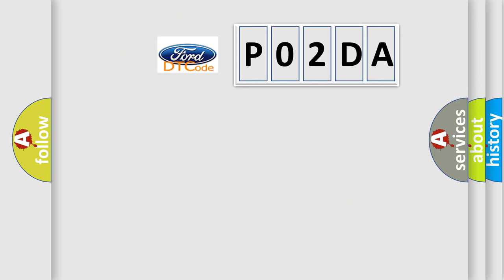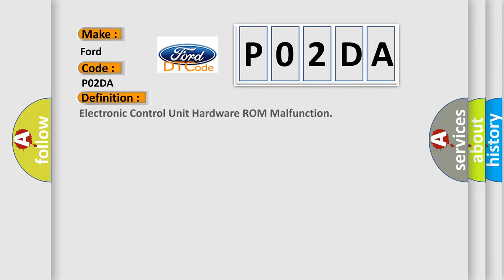The number itself does not make sense to us if we cannot assign information about what it actually expresses. So, what does the diagnostic trouble code P02DA interpret specifically for Infinity car manufacturers? The basic definition is: Electronic control unit hardware ROM malfunction.